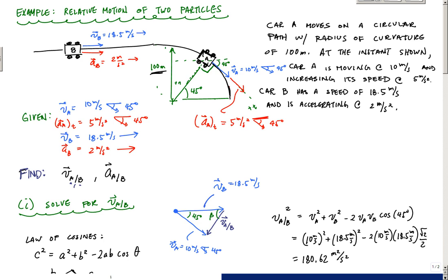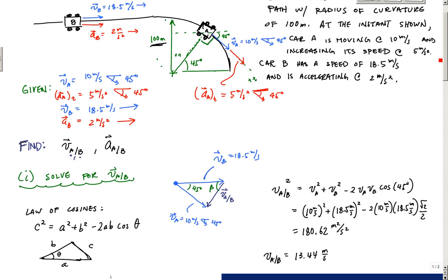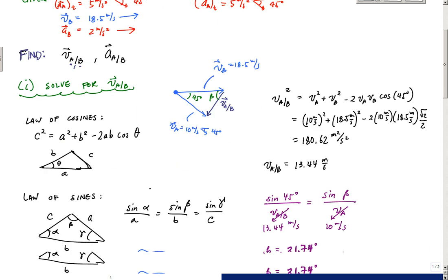Welcome back. We just finished the relative velocity calculation, and now we're going to move on to the relative acceleration calculation between these two vehicles, A and B. The first thing we need to do is determine the total acceleration of car A, because we need the total acceleration of each of the particles in order to calculate the relative acceleration.